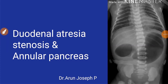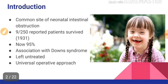Hello my dear friends. Our topic for presentation today is duodenal atresia, stenosis, and annular pancreas. Duodenal atresia is one of the most common sites of neonatal intestinal obstruction. Earlier, mortality of duodenal atresia was high. According to a case series reported in 1931, in around 250 reported cases of duodenal atresia, only 9 of the patients survived.